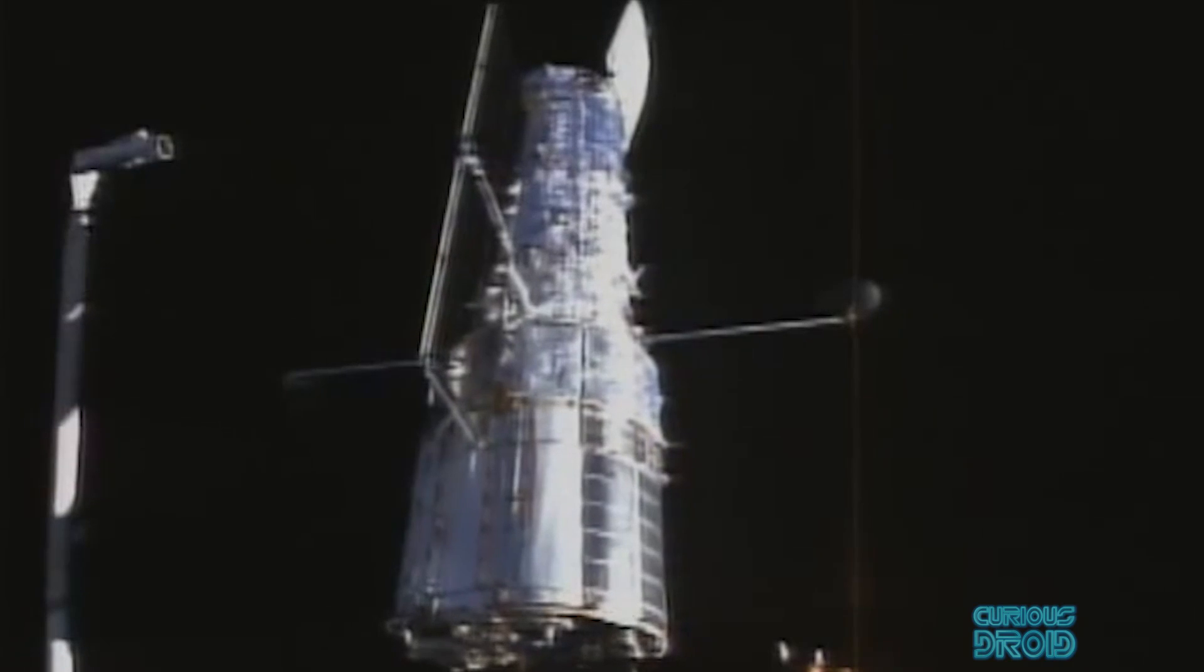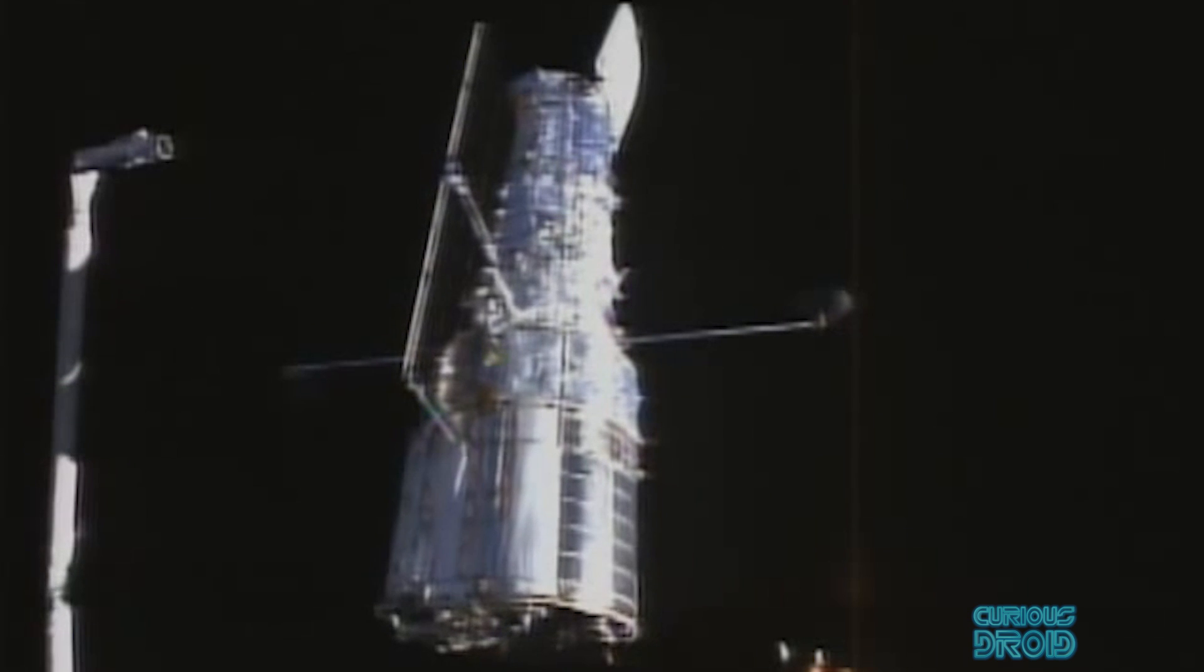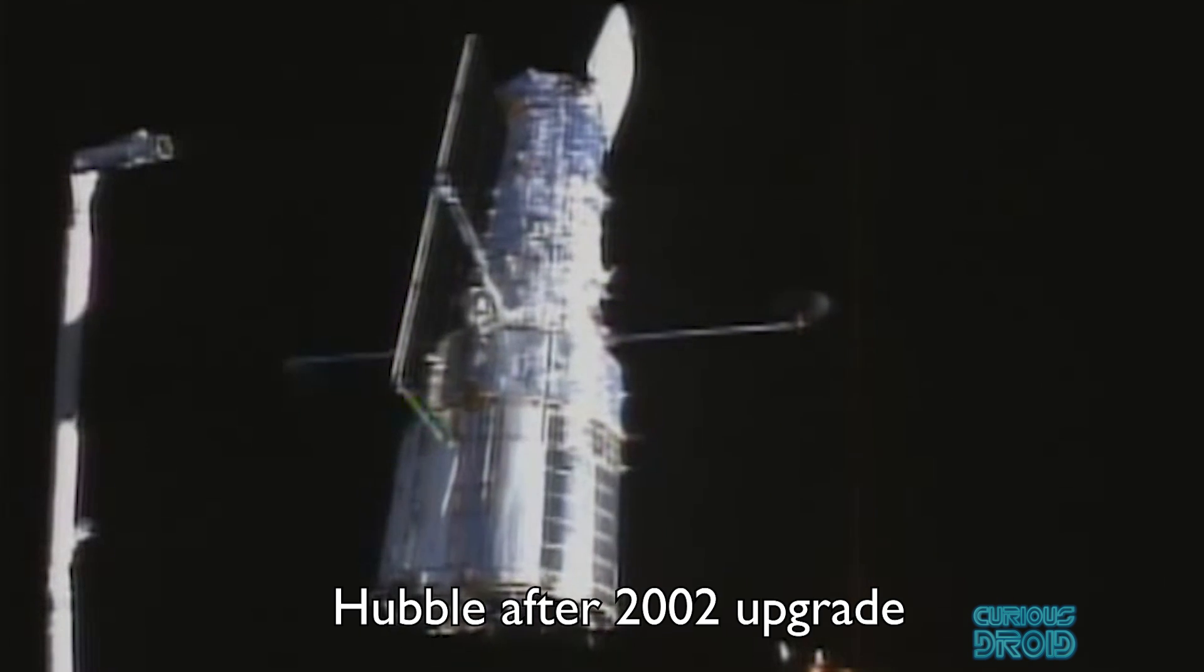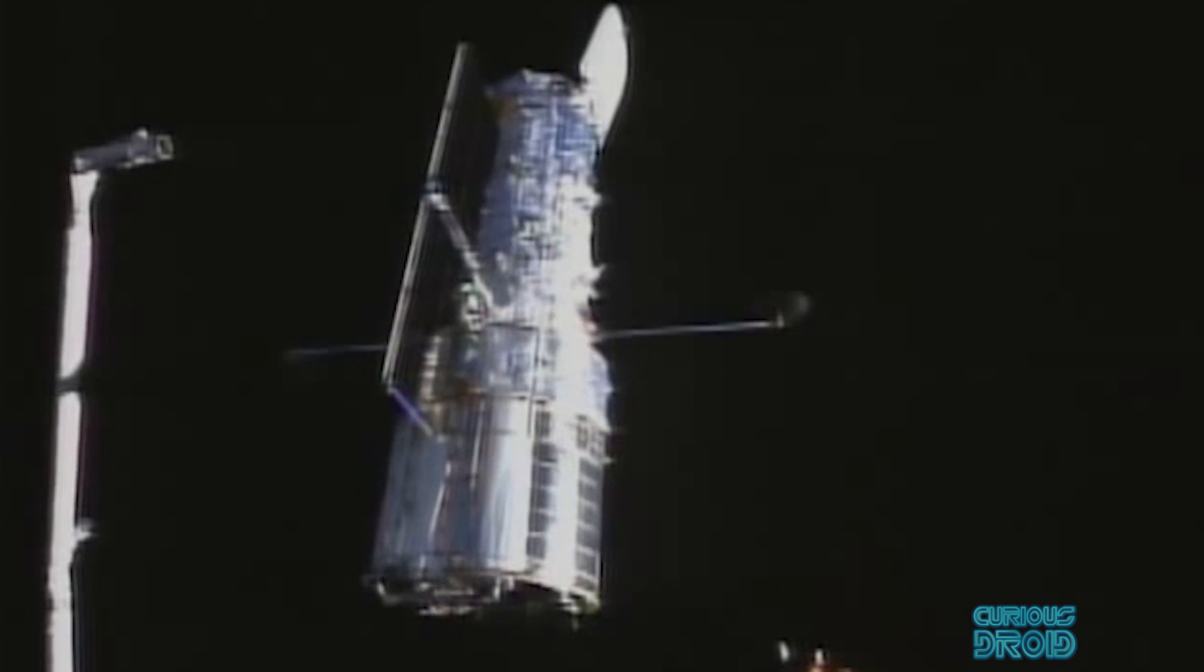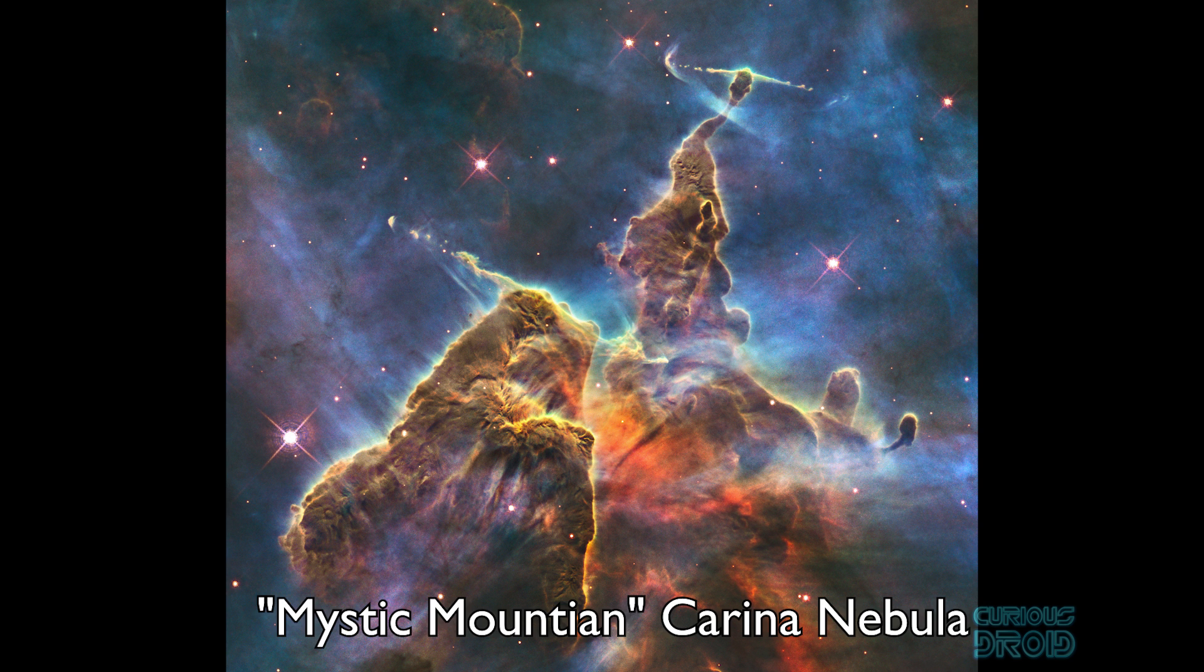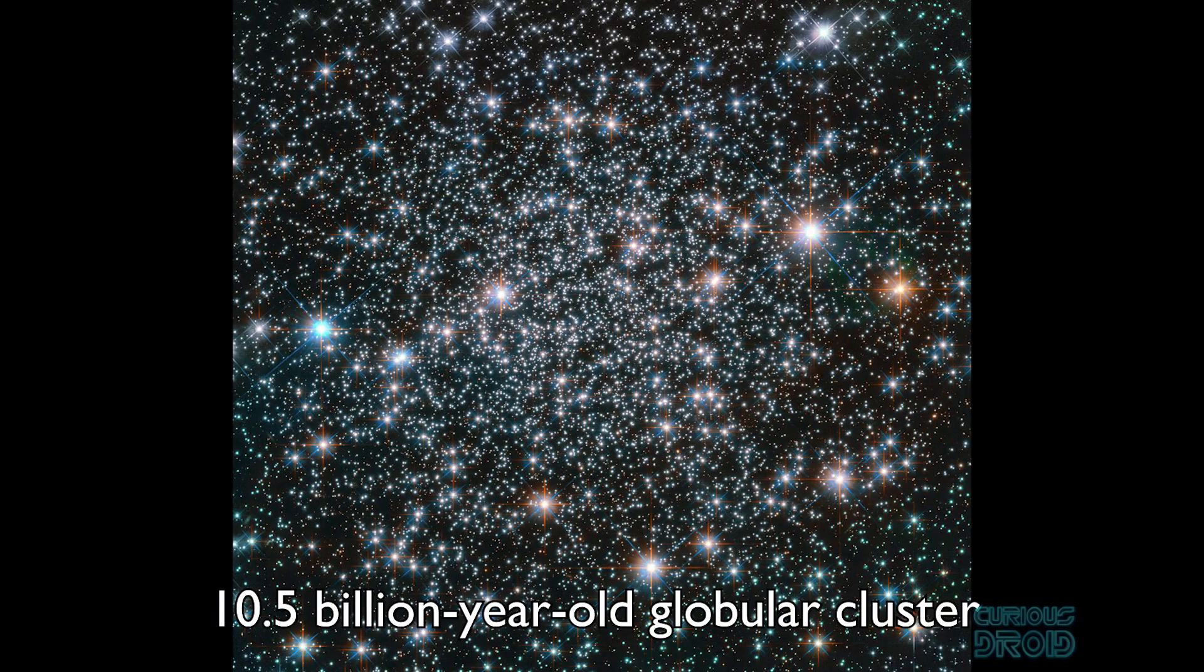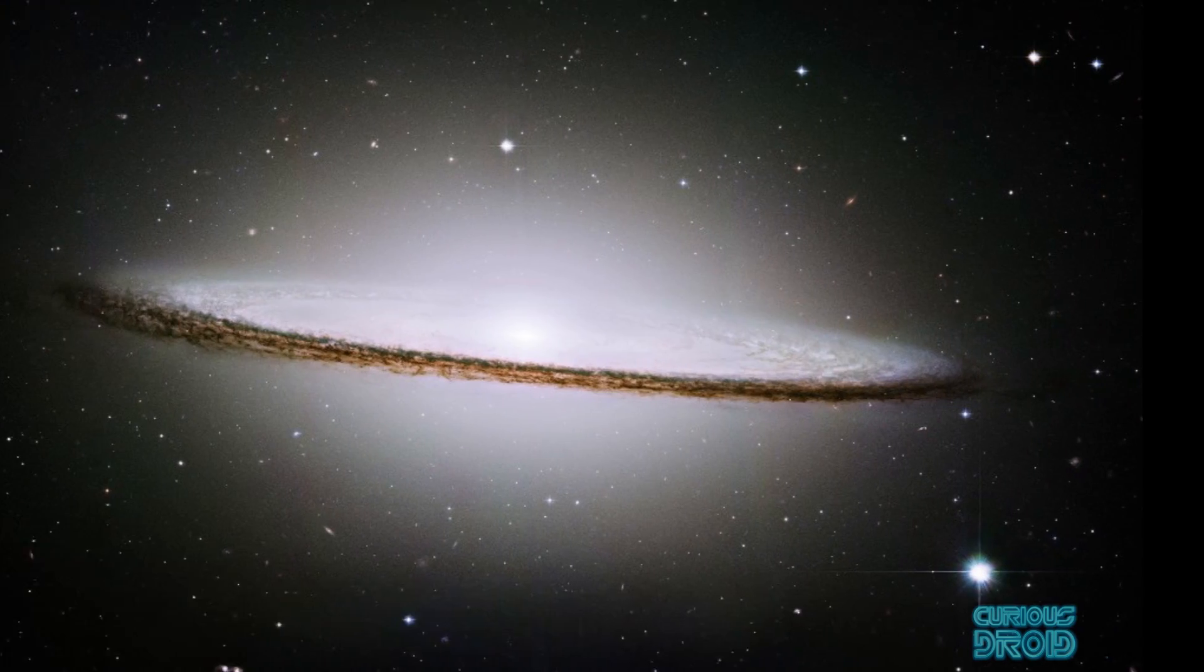Hubble is still in operation today and has been updated over the years. It's expected that it will be in operation until between 2028 and 2040, when the natural decay in its orbit will bring it back to Earth if it is not reboosted into a higher orbit. Until then, it will continue to provide mankind with some of the most scientifically useful and inspirational views of our universe to date.